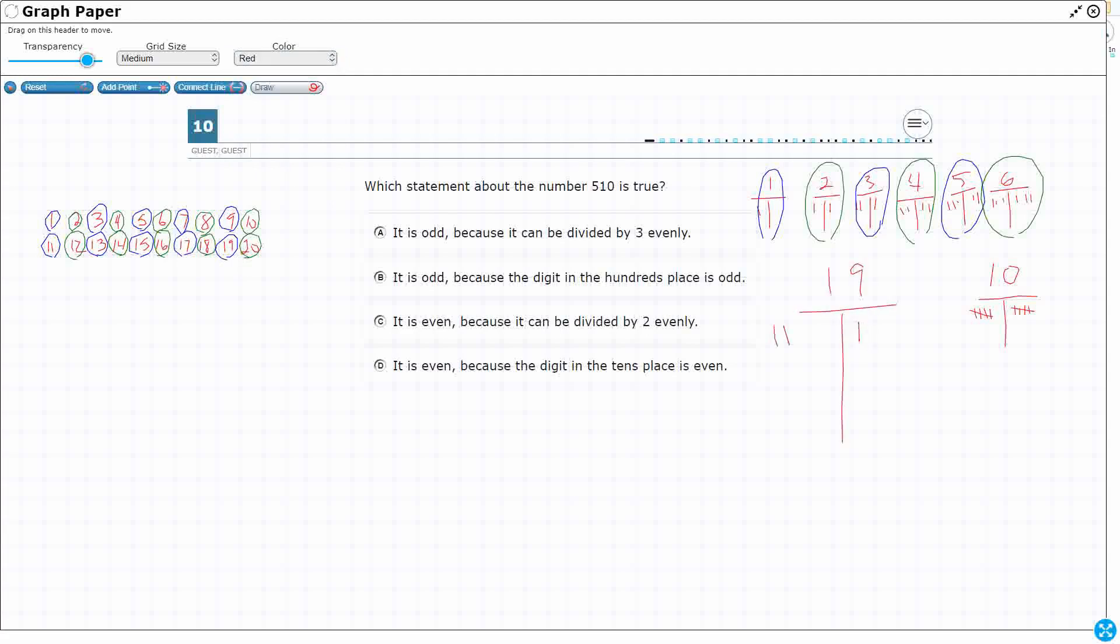So 1, 2, 3, 4, 5, 6, 7, 8, 9, 10, 11, 12, 13, 14, 15, 16, 17, 18, 19. Oh, I don't have enough to finish that last one. See, that's why that is odd.